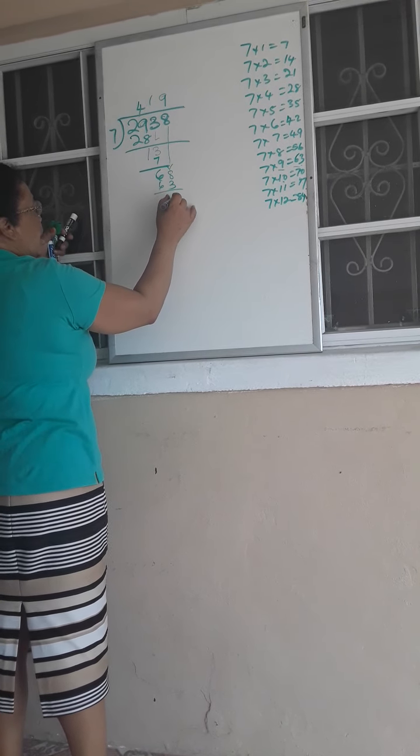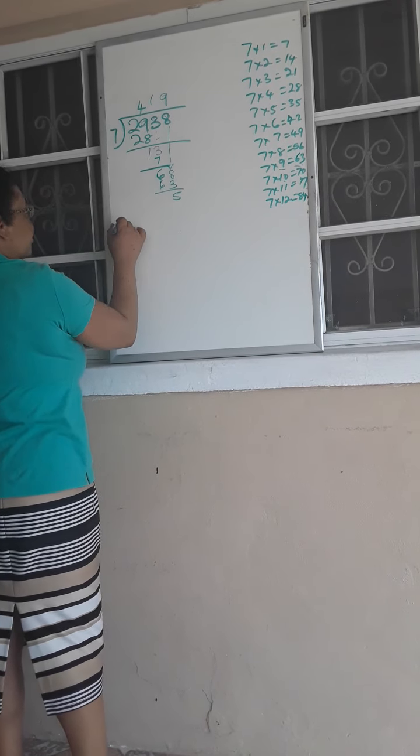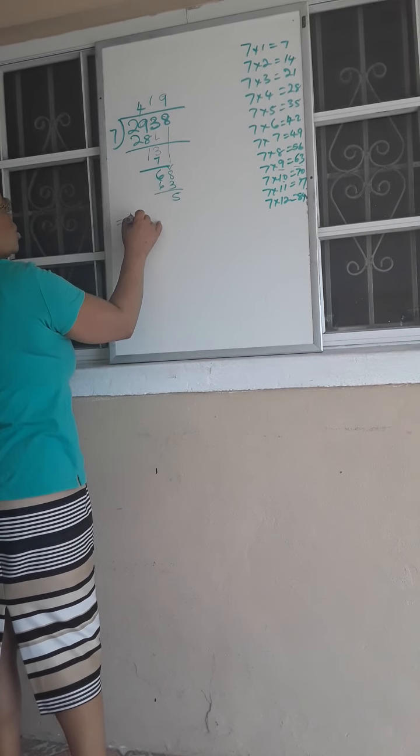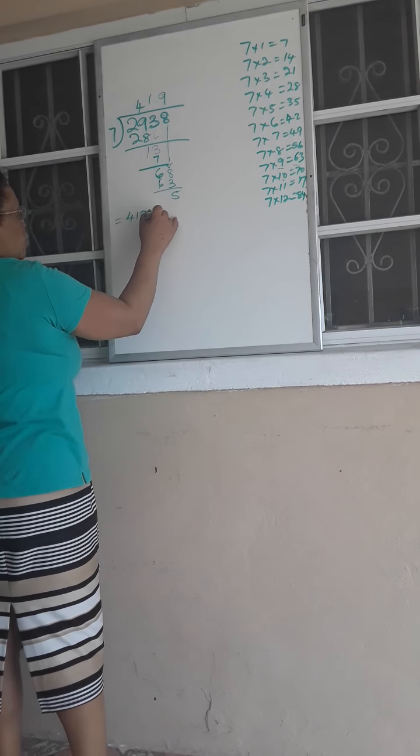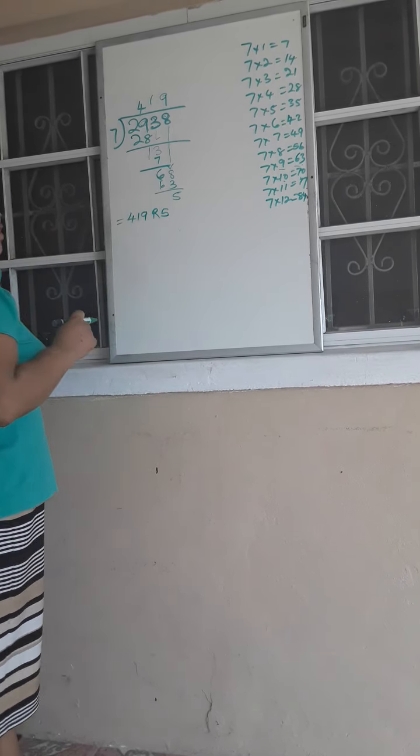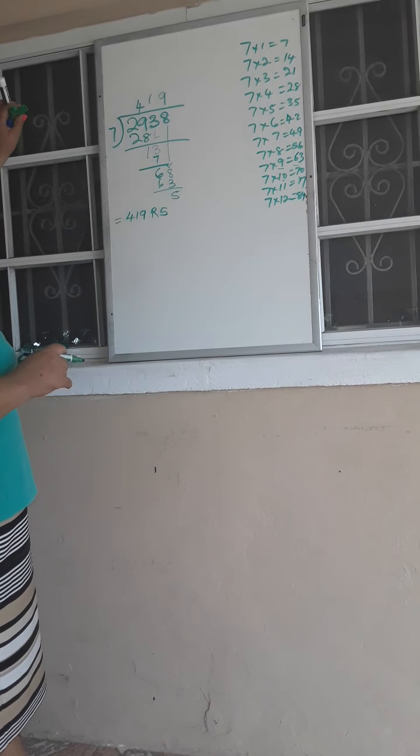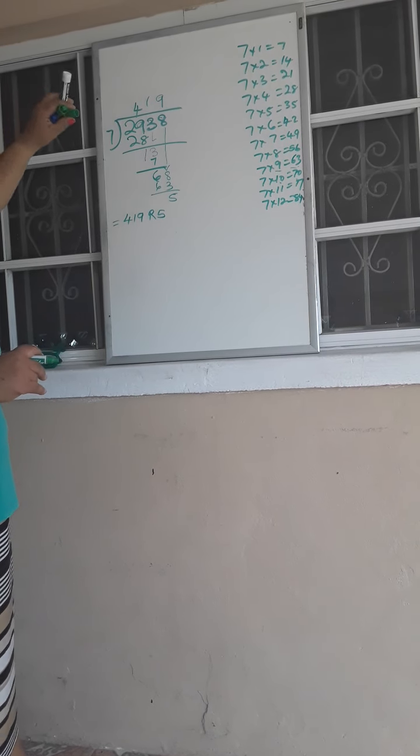8 take away 3, and then I get 5. 6 take away 6 is 0. And so my answer for this problem would be 419, and I'm going to get remainder 5. So that would have been my answer for 7 into 2938.